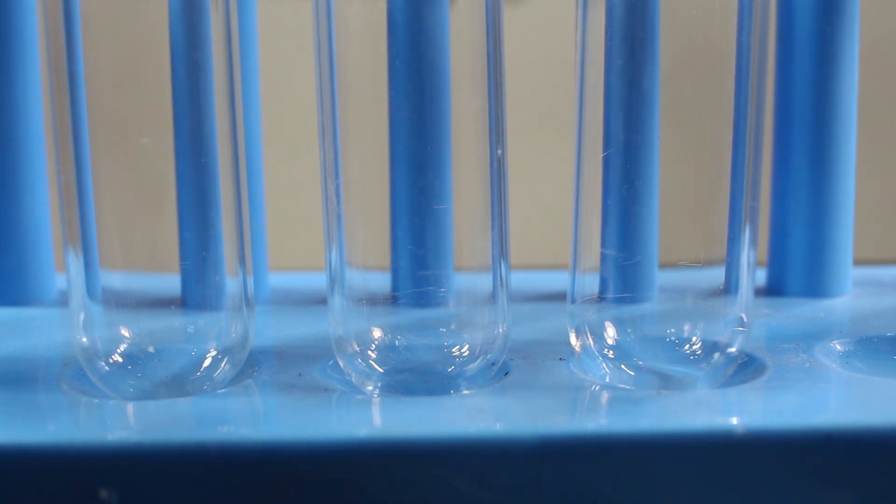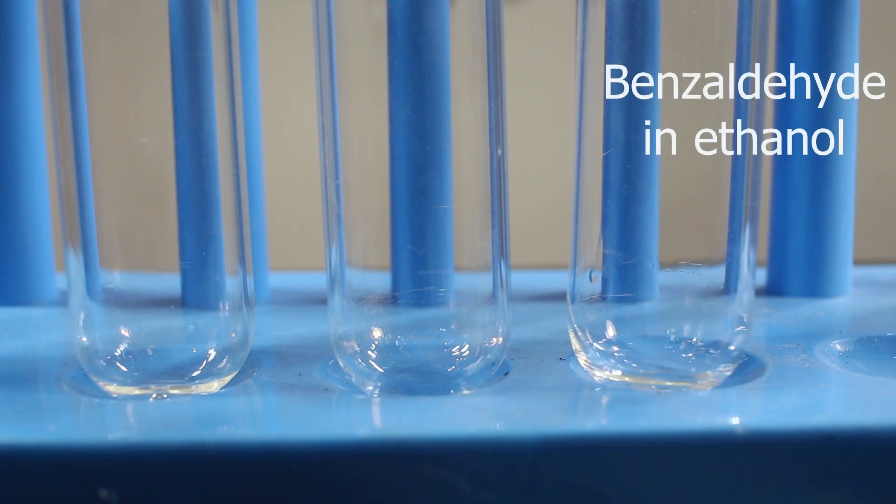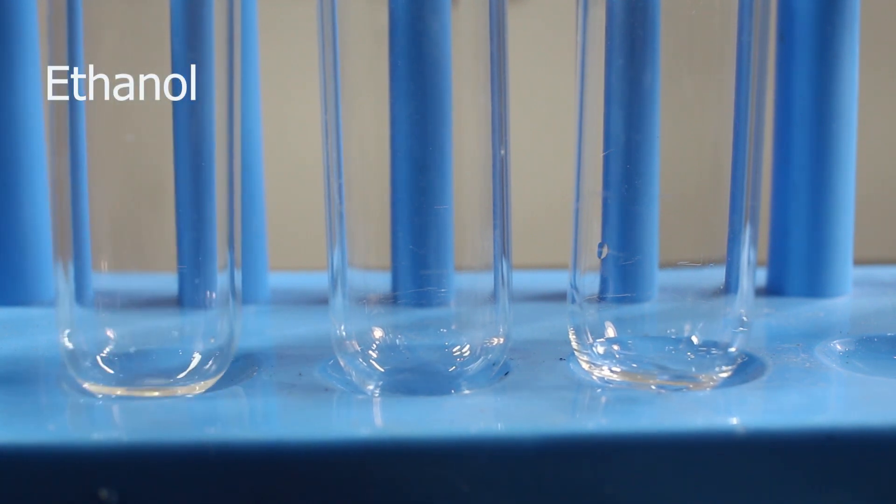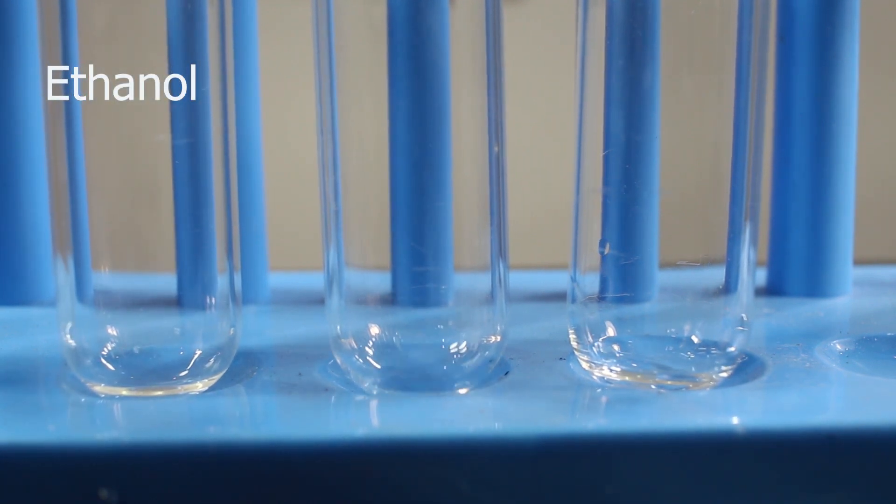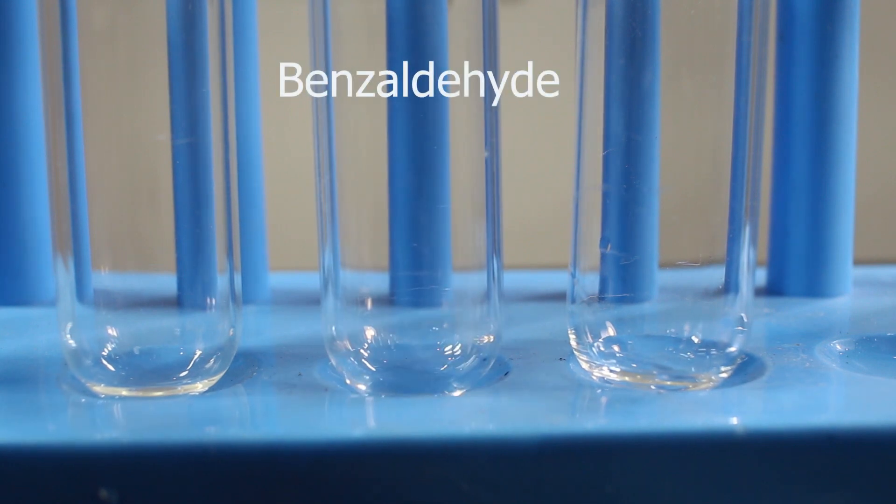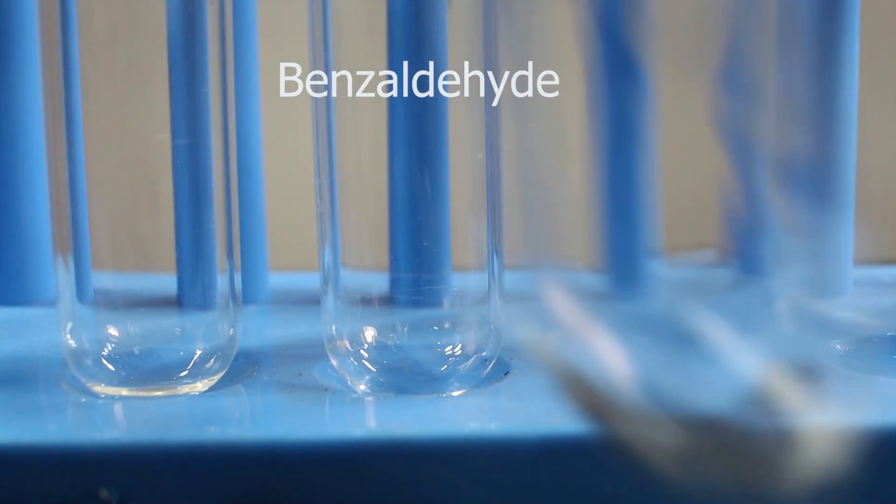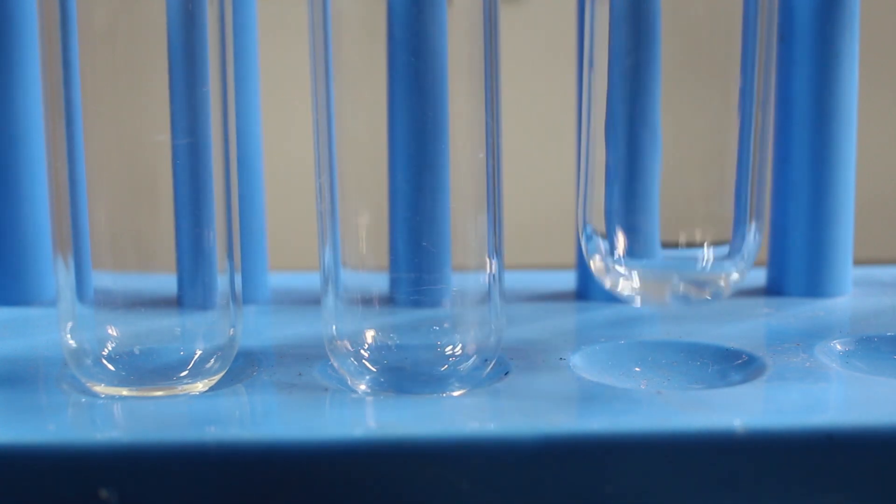First two tubes are needed for control. Just to see that ethanol is not giving a positive result, which goes here alone. And that the positive result is expected only in the third test tube, benzaldehyde dissolved in ethanol. See again what we have here, ethanol in the first, benzaldehyde in the second, and solution of benzaldehyde in ethanol in the third.